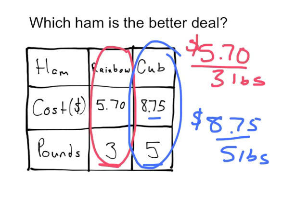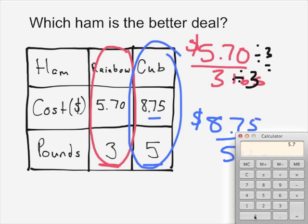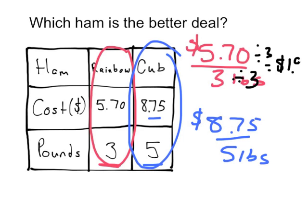We can do just like the last problem and change these to unit rates by changing the denominators to 1. So how do I change a 3 into a 1? I divide by 3, and to be fair, I need to do that to the numerator as well. I'm going to use my calculator real quick and we find that this is going to be $1.90.